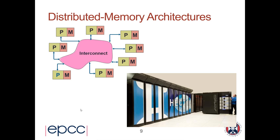We've talked in the abstract about how message passing insulates you from the physical communications network, but it's important to realize that this model maps very well onto what real supercomputer parallel computer hardware looks like. That's one of the reasons why message passing has been so successful over the past three decades. Here's a picture of a machine which was the national supercomputer in the UK until the early 2010s — HECTOR, located at EPCC.